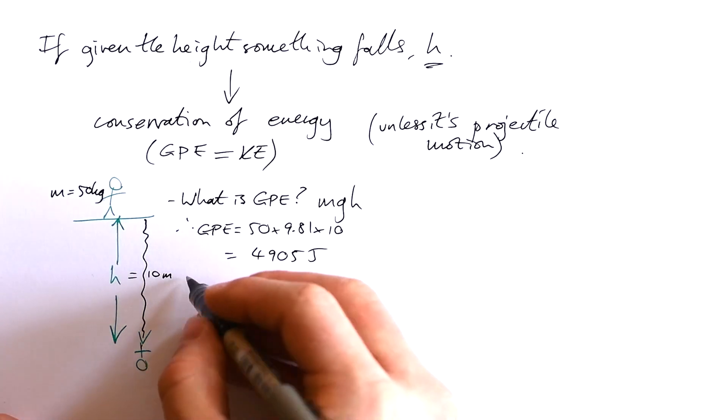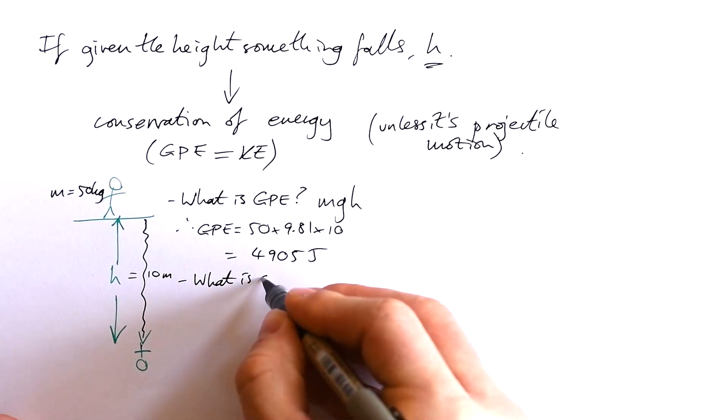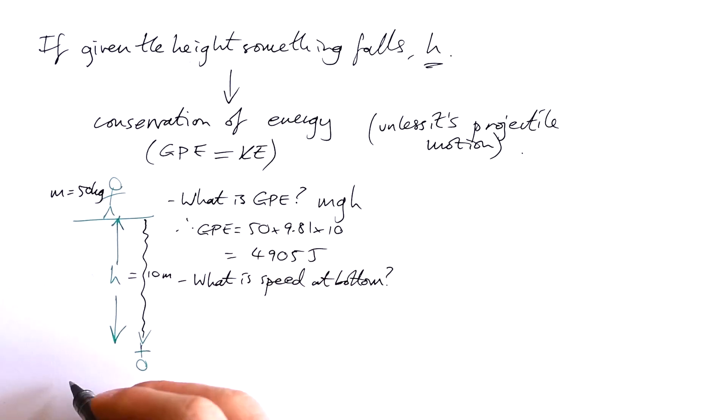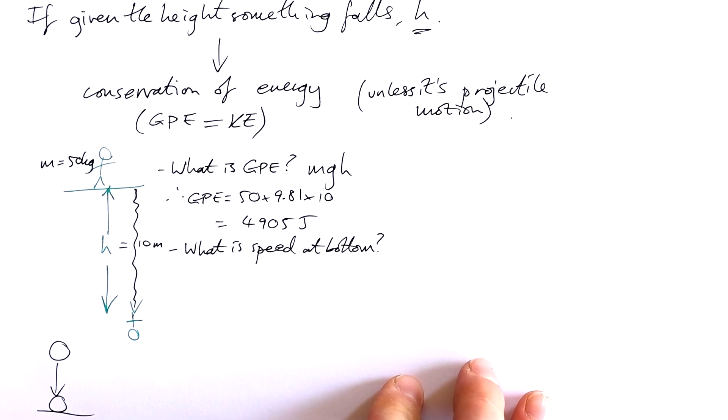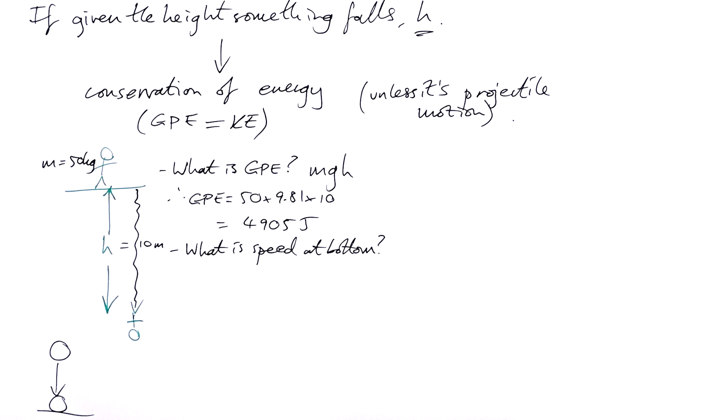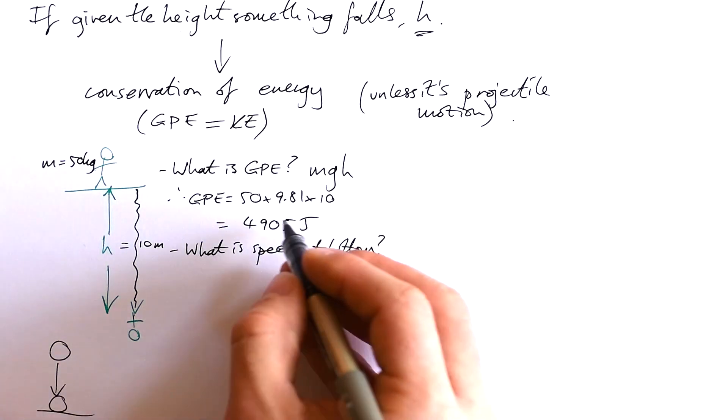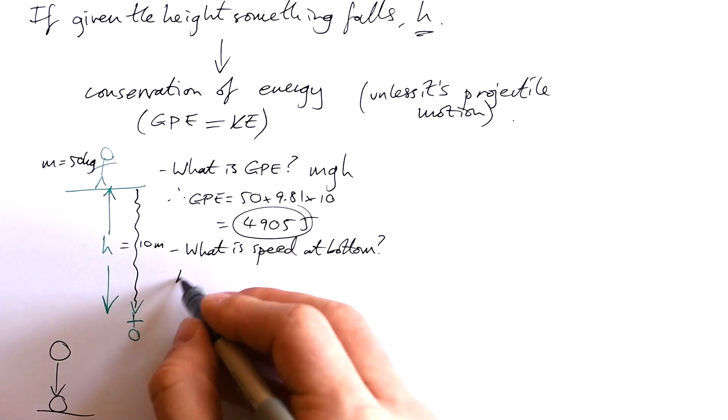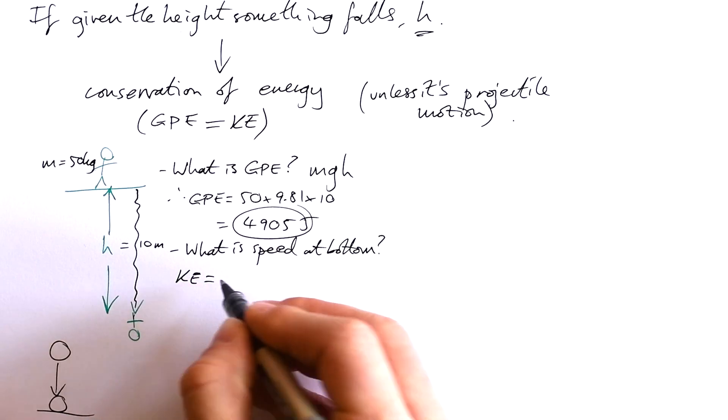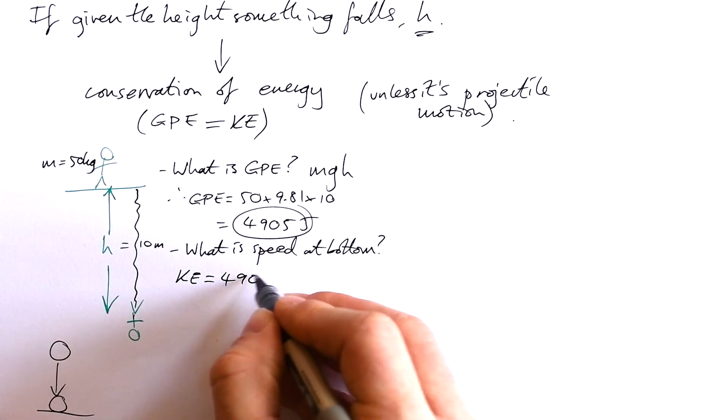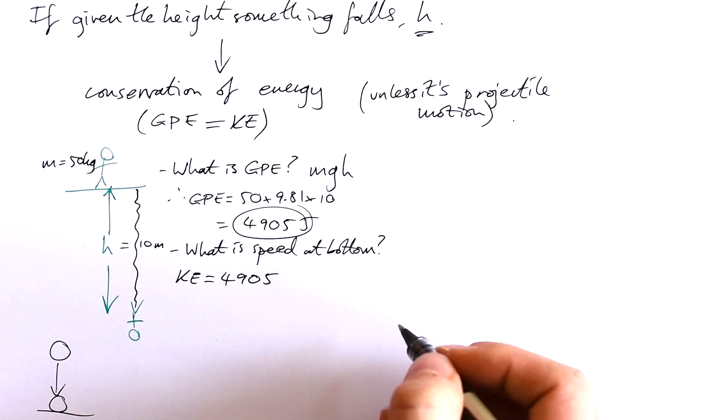But then, chances are what you're going to have to do is calculate what is the speed at the bottom. And sometimes people think that when a ball hits the ground its end speed is zero—oh, because it's stationary. Nope. If we're asked to calculate the speed at the end, we're asked to calculate the speed at which it hits the ground, not what it is after a couple of seconds on the ground. So we know that this is going to be equal to the kinetic energy at the bottom because it's lost all that GPE and it's gained that much kinetic energy.